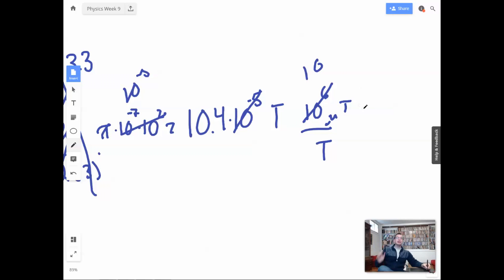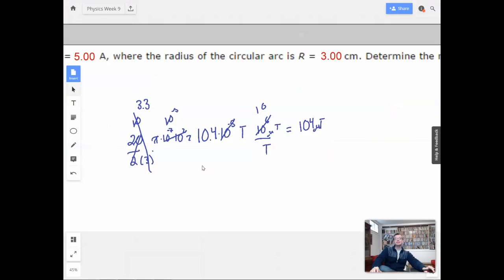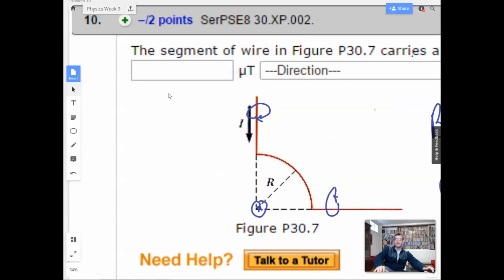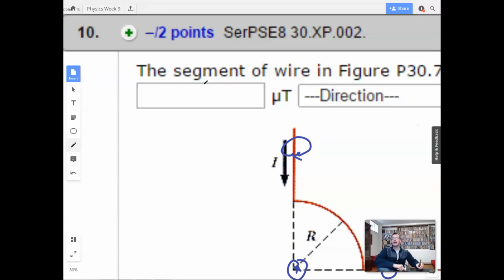So this is gonna cancel with that and leave this with just 10. So this will be a total of 104 micro Teslas. So we're gonna have 104 micro Teslas, and it'll be into the board.